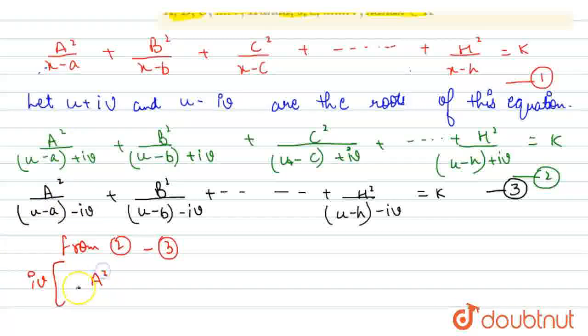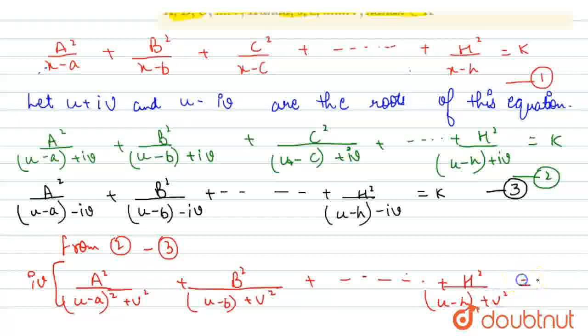So the left part is a² / [(u - a)² + b²] + b² / [(u - b)² + b²] + up to h² / [(u - h)² + b²] = 0.